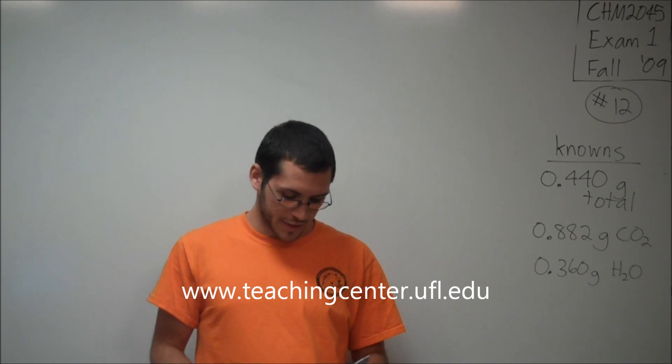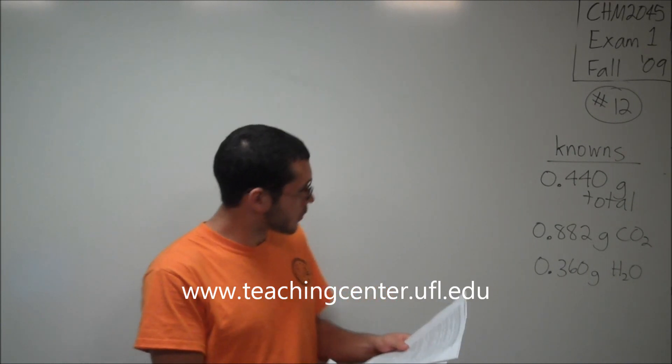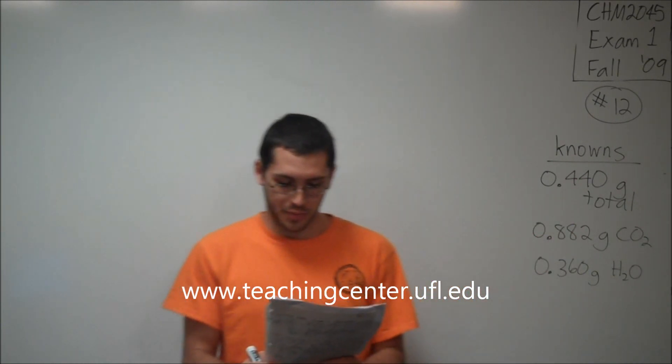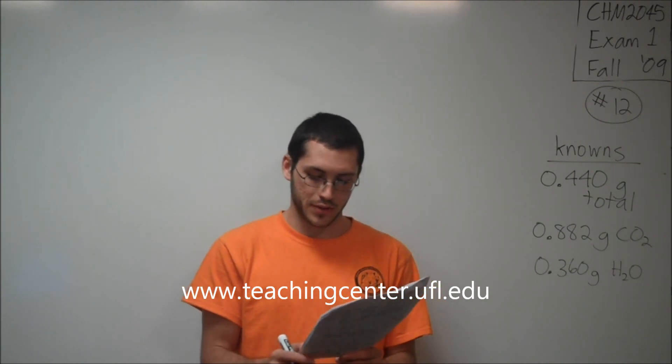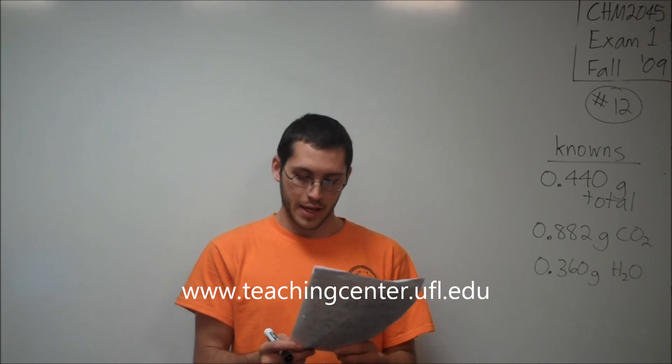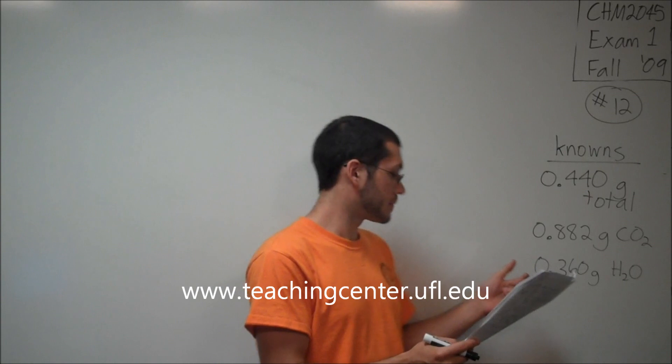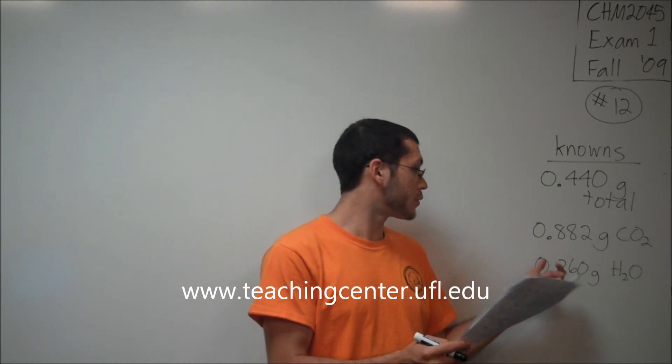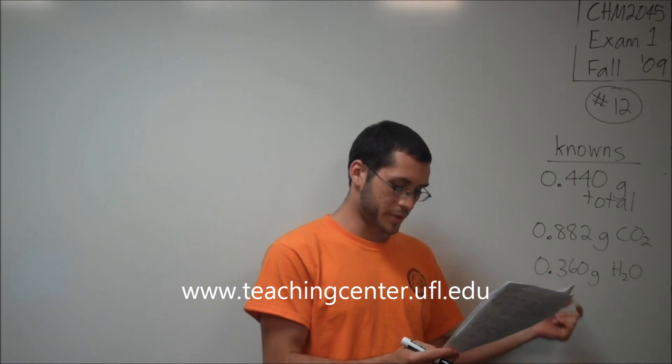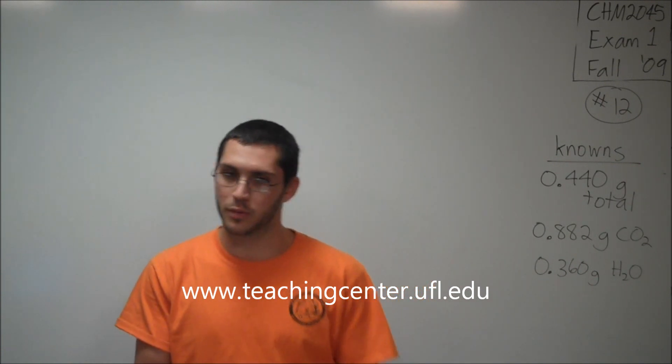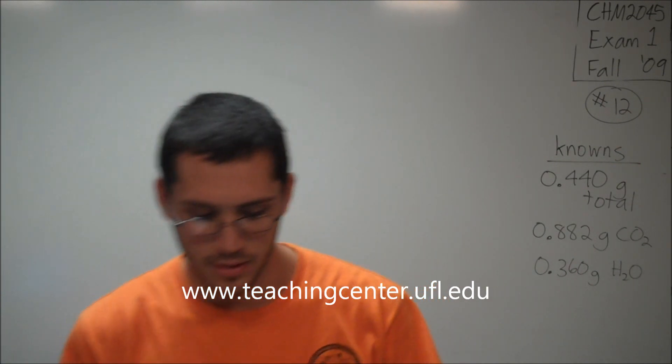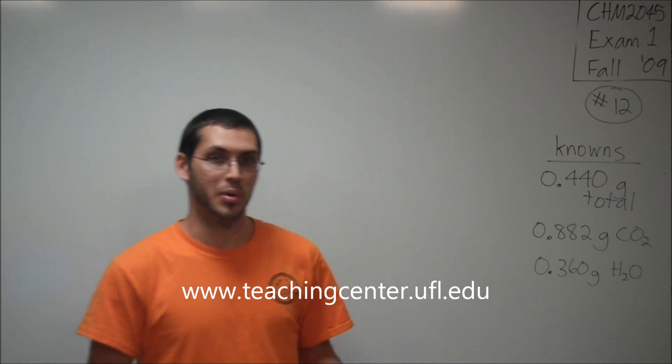Number 12 says to us, a 0.440 gram sample of butyric acid, which contains carbon, hydrogen, and oxygen. It's combusted in excess oxygen, yielding 0.882 grams CO2 and 0.360 grams H2O. What is the empirical formula for the butyric acid, the acid in butter?